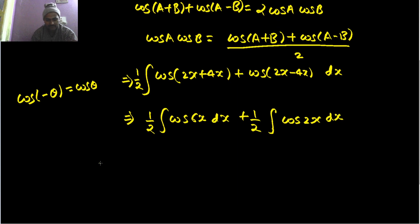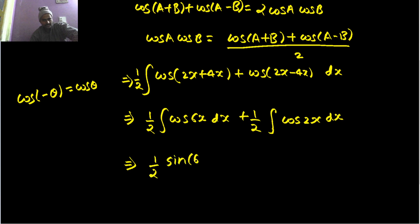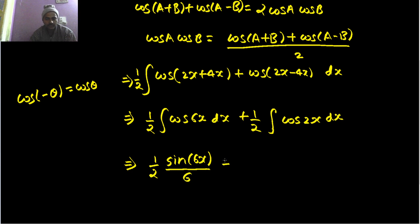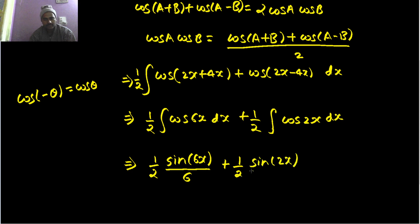Now you can either go for substitution or direct. For substitution, treat this equal to t. Integration of cos is sine, so we get sine 6x — but it is not just x, it is 6x, so we will have to extra divide by the coefficient of x, which is 6 in this case. Similar story for the second integral: we get sine 2x and we will have to do an extra division by 2, plus a constant C.